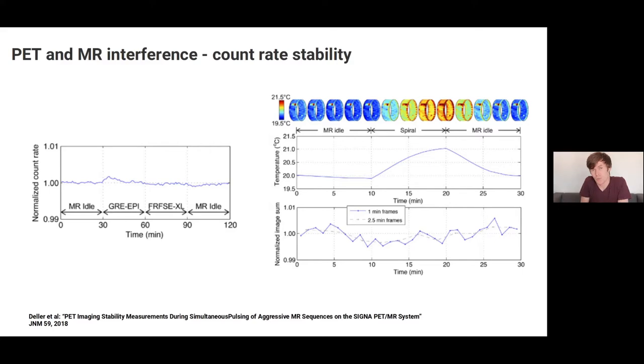The first challenge is to make sure that the MR acquisition doesn't interfere too much with the PET acquisition. This can be done by performing a PET acquisition with and without acquiring MR at the same time and comparing the count rates as shown here on the left. In the publication, it could be shown that even when MR sequences are used that use a lot of RF power, the PET acquisition is not influenced. So the normalized count rate stayed very stable.